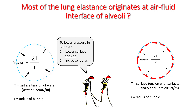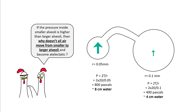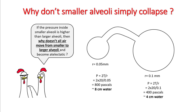To lower pressure in the alveoli, you need to lower the surface tension and increase the radius. The analogy is that it's very difficult to blow a balloon when you start inflating it, but it becomes easier once it is blown up. By this principle, the pressure inside an alveolus with a smaller radius will be much higher than one with a larger radius.